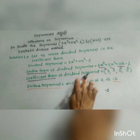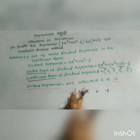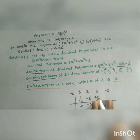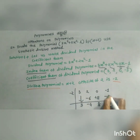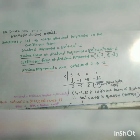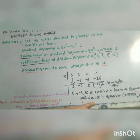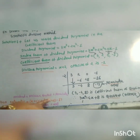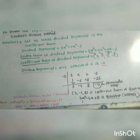Write coefficient form: 3, 2, 0, negative 1, and use negative 2. Bring down 3; 3 times negative 2 equals negative 6; 2 plus negative 6 equals negative 4; negative 4 times negative 2 equals 8; 0 plus 8 equals 8; 8 times negative 2 equals negative 16; negative 1 plus negative 16 equals negative 17. Therefore quotient is 3x squared minus 4x plus 8 and remainder is negative 17. So: 3x cubed plus 2x squared minus 1 equals (x plus 2)(3x squared minus 4x plus 8) minus 17.